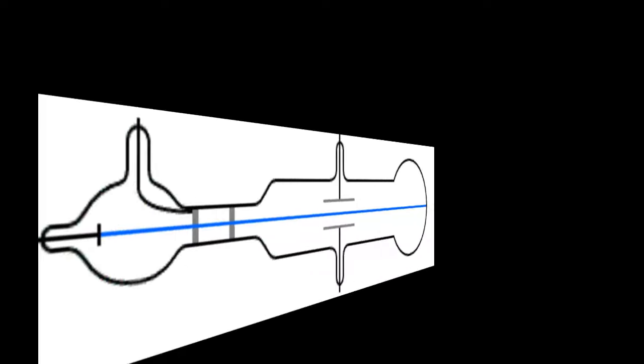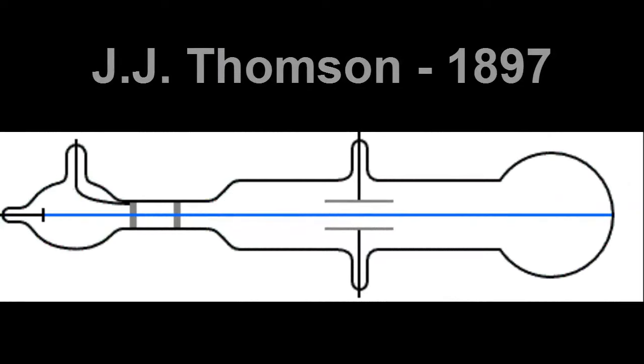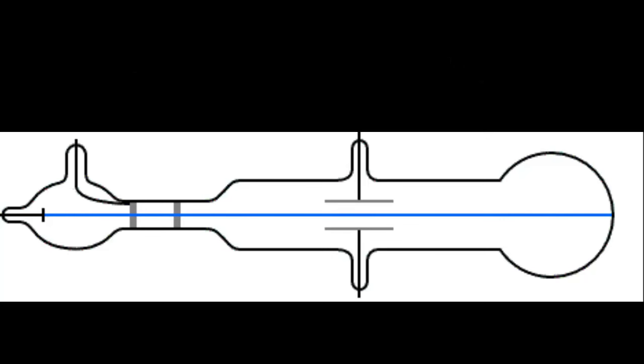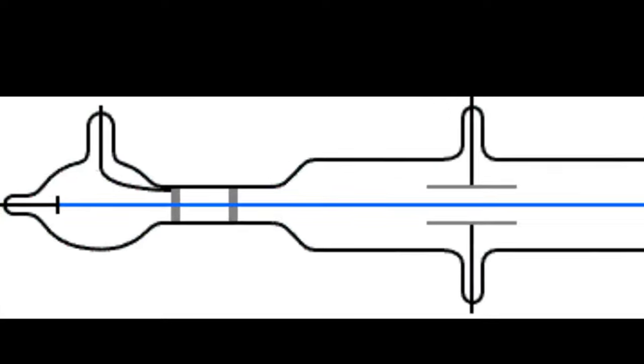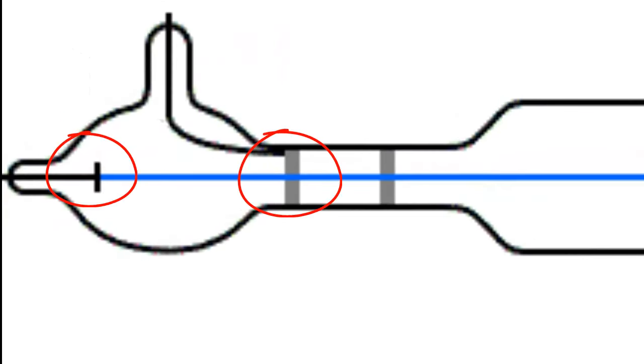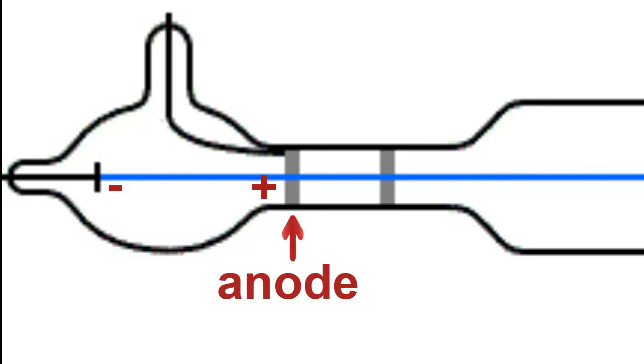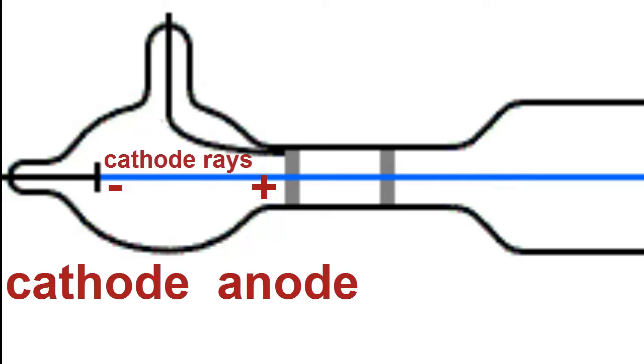In 1897, a clever Englishman called JJ Thompson designed a glass tube filled with low pressure gas and containing two metal plates inside. When he put a big electric charge on the plates, he found that the positively charged plate called the anode was able to pull a beam of tiny particles out of the negatively charged plate called the cathode. Because the beam came from the cathode, he called them cathode rays, and he called the apparatus a cathode ray tube.